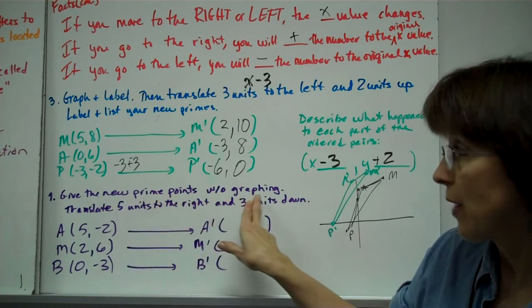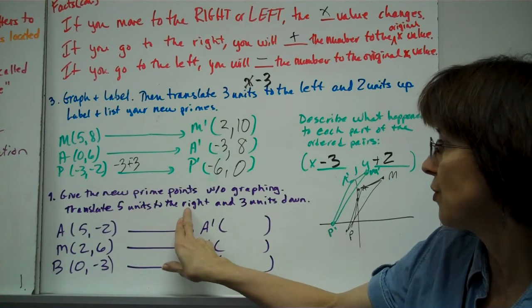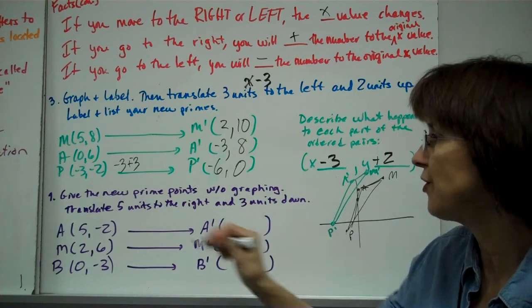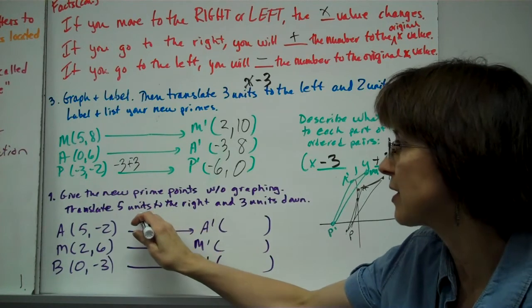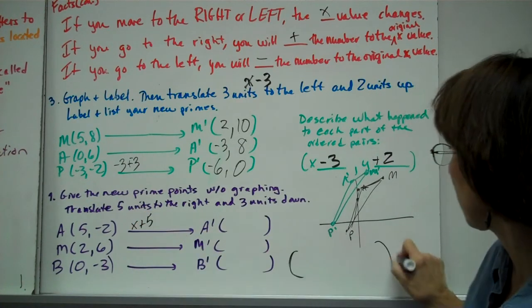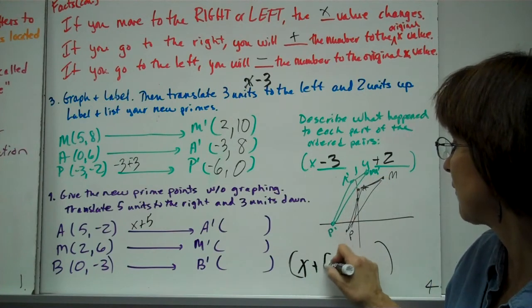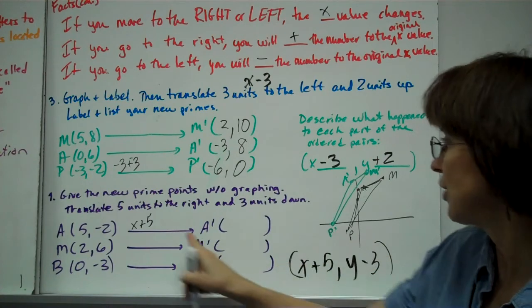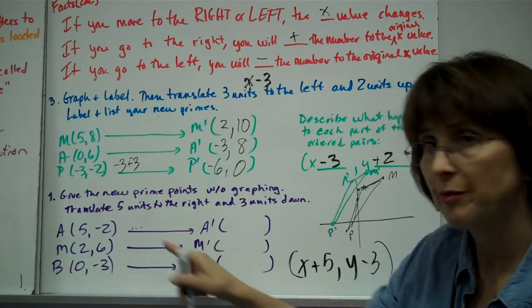Last one: give the new prime points without graphing. Translate 5 units to the right and 3 units down. We have to always think that through. 5 units to the right, the right or left is your x, so to the right will be x+5. And then your y is going to be 3 units down, so it'll be y-3.